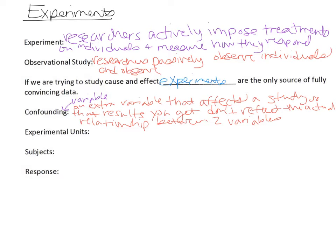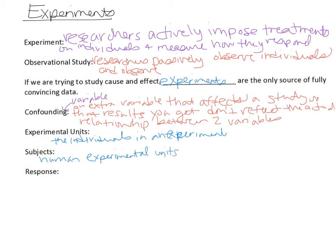The next term is experimental units — the individuals you're actually doing an experiment on. If those individuals are humans, we call them subjects. Our last key term here is the response variable, which is simply what the researchers are measuring.